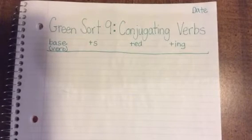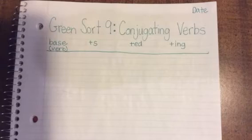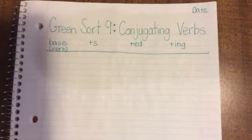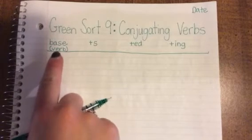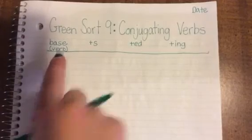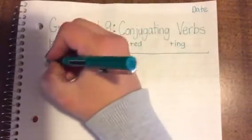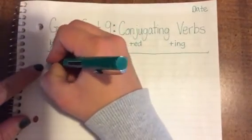All right, now that your notebook looks like mine — I apologize for these weird shadows, it's getting dark outside. So what we're going to do is start with our base word. Our base word is simply the verb all by itself. For the first one it's going to be the verb to play.